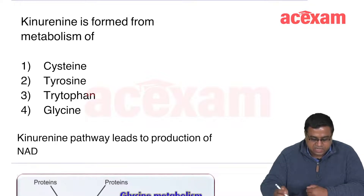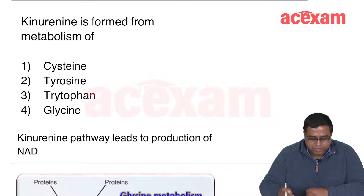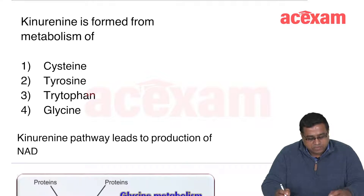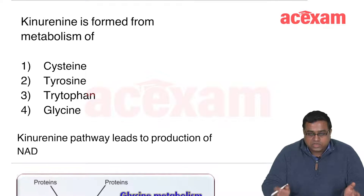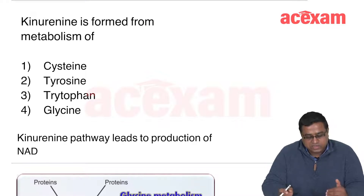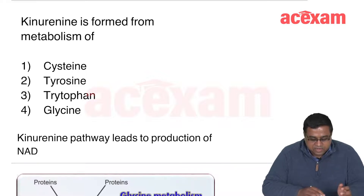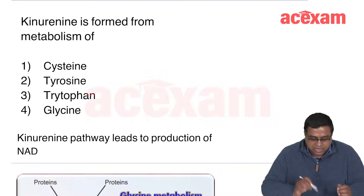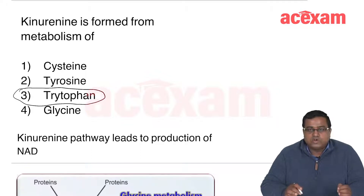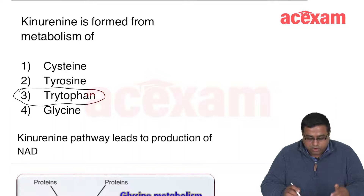Another fact-based question with biochemistry application: xanthurenic acid in urine is formed from metabolism of which amino acid? You should know the important products of each amino acid's metabolism. The answer is tryptophan — the xanthurenic acid pathway leads to production of NAD (nicotinamide adenine dinucleotide). So xanthurenic acid is linked to NAD formation, and NAD is linked to tryptophan.